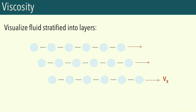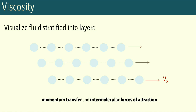Let's try to visualize what happens in our fluid when describing what viscosity really is. For our model, we'll be visualizing our fluids stratified into layers. These layers are moving past one another in a particular direction, namely the x direction. As we try to make our fluid flow in this direction, there's going to be friction between the layers. Some causes of this friction include momentum transfer and intermolecular forces of attraction.